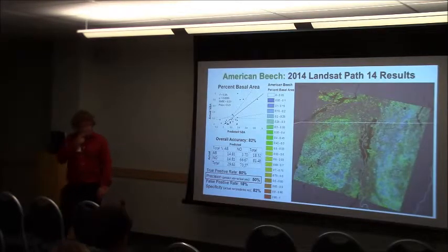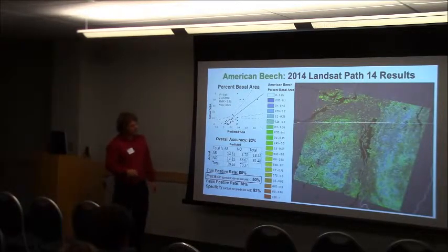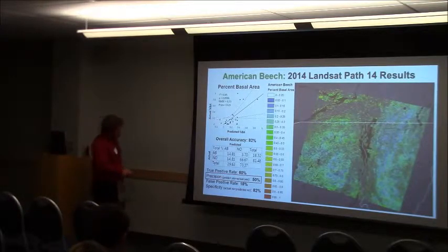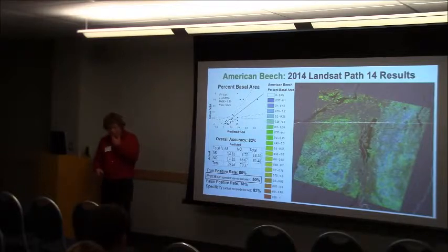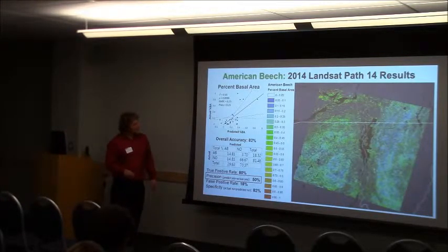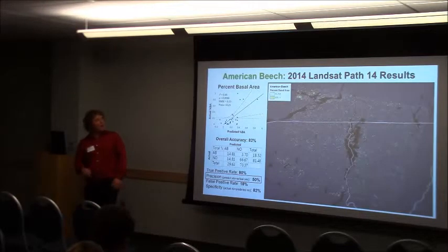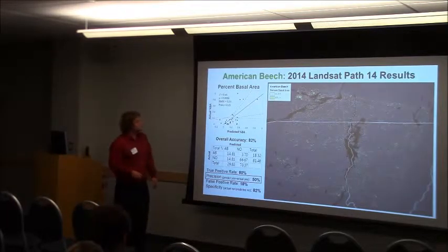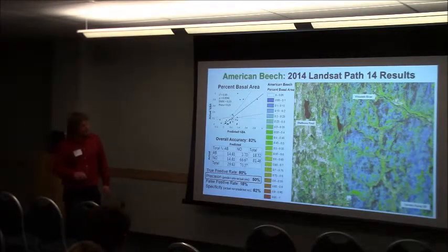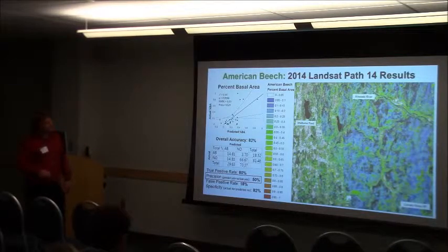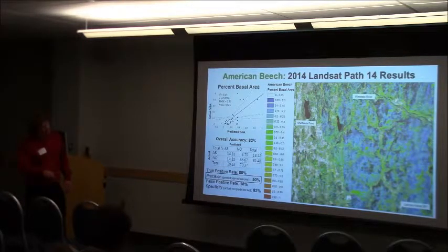Beech — we also did pretty well on, but beech just isn't really a dominant part of the landscape. You see really low basal areas, but it is distributed throughout the path. Precision — not so good, about 50% in terms of our predicted yeses matching our actual yeses on the ground. Really good at telling you where it's not, and our true positive rate is pretty good. And perhaps American Beech is a bit of a misnomer because we've got a hot spot up here in Canada. Zooming in, the Champlain Valley shows not a lot of dominance in percent basal area for beech, with some hot spots and a little bit down at Camel's Hump State Park.